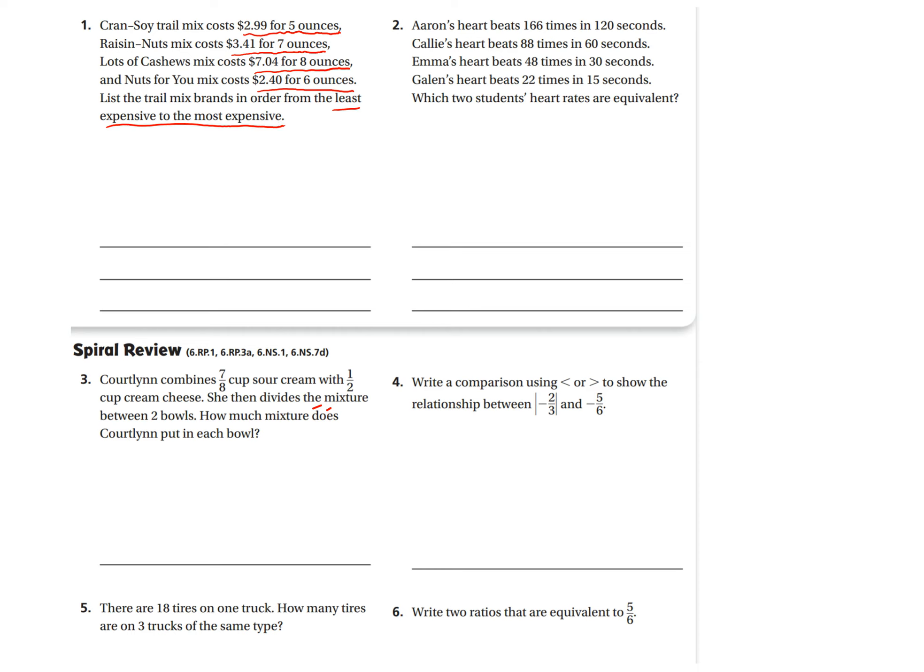So, again, you need to find the unit rate. Don't just say, oh, $2.40 is the least. That's not what they're asking. It's per ounce. That's what's going to tell us what is the cheapest. So, again, you're going to need to do the division. The first one, five ounces, is $2.99. By doing this division, you'll be able to figure out how much it costs for one ounce.